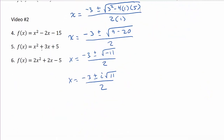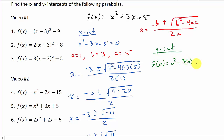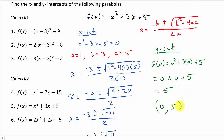So for this problem, the x-intercept is none. Now let's find the y-intercept. We evaluate the function at zero: f(0) = 0² + 3(0) + 5 = 0 + 0 + 5 = 5. So our y-intercept is (0, 5).